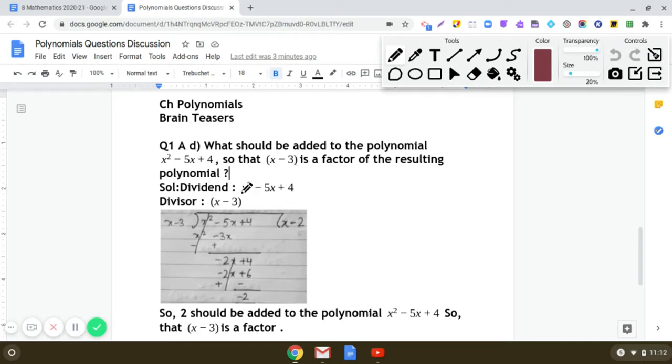When we divide x² - 5x + 4 by (x - 3), we get the remainder as -2. So tell me, what should we add to x² - 5x + 4 so that we get the remainder as 0? Because in that situation only, (x - 3) will be the factor of the resulting polynomial.